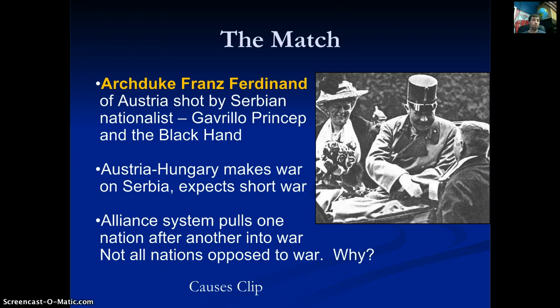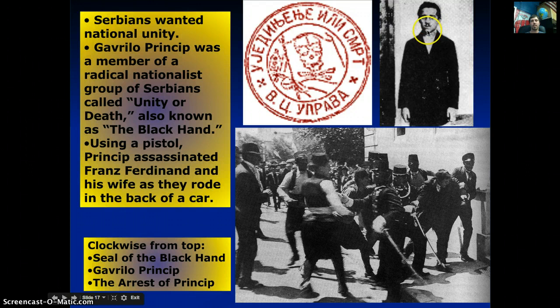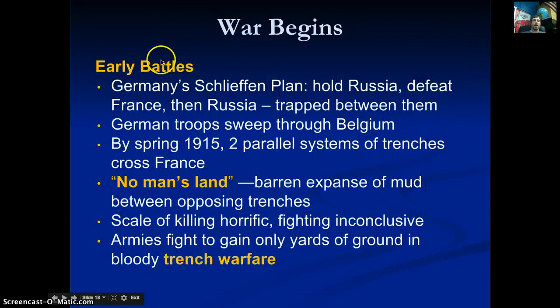Because of the alliance system, however, one nation after another is pulled in. Not all nations are opposed to war, due to that nationalist and militaristic feeling of superiority. Princip is shown here being arrested after killing the Archduke. Germany executes its Schlieffen Plan — hold off Russia, defeat France, then turn to defeat Russia — sweeping through Belgium to get into France.